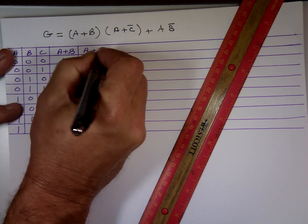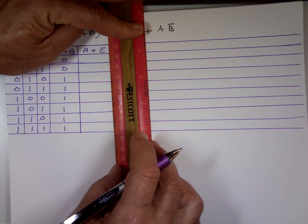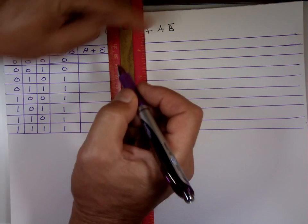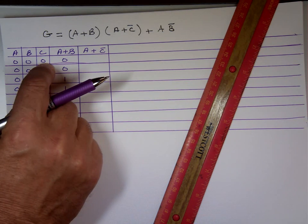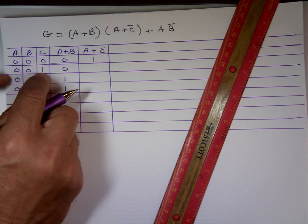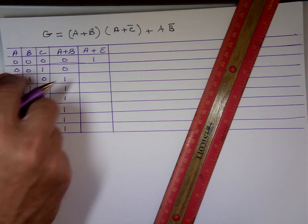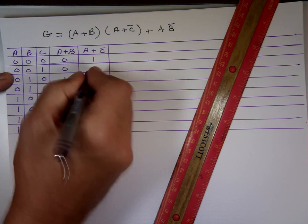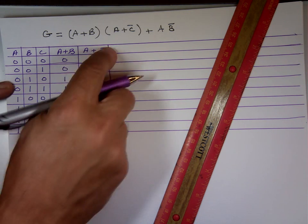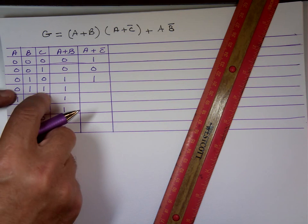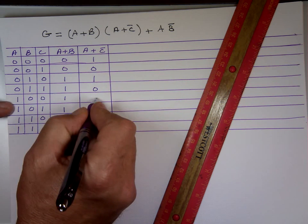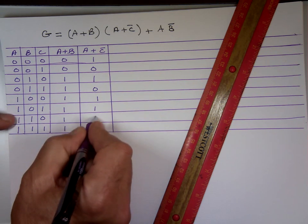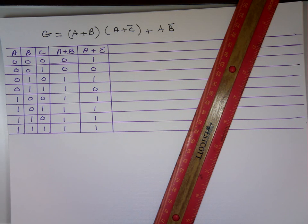Now A plus C bar. I've got to complement C in my head and OR it with A. C is zero, complement is one, one OR zero is one. C is one, complement is zero, zero OR zero is zero. C is zero again, complement one — result one. C is one, complement zero, zero OR zero is zero. The rest are one because A is one. As long as one input is one, the whole OR gate gives one.